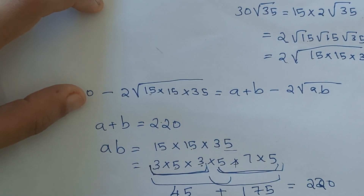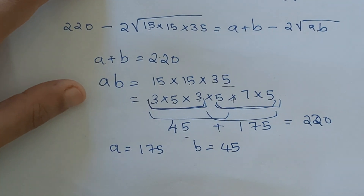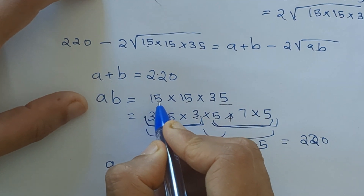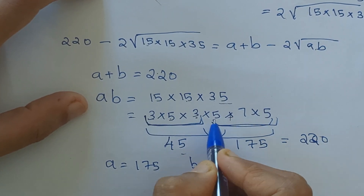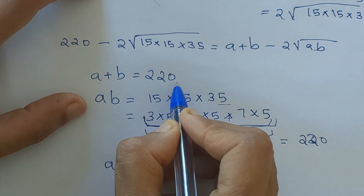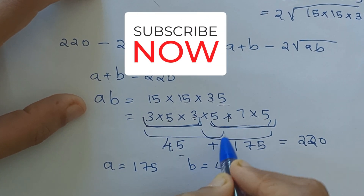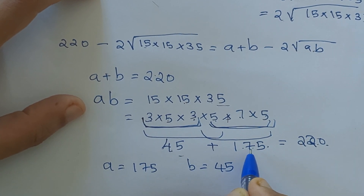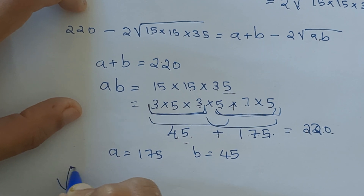So we got a equals 175 and b equals 45. We factorized and tried different combinations of the factors. When we take 3 × 5 × 3 = 45 and 5 × 7 × 5 = 175, they add up to 220. Therefore a equals 175 and b equals 45.